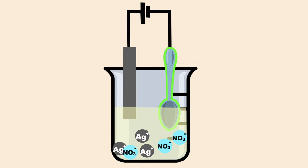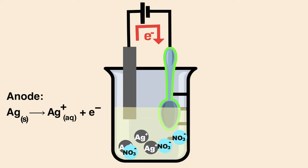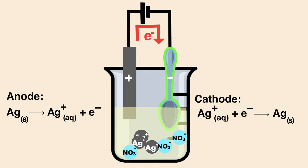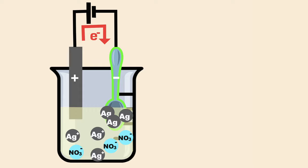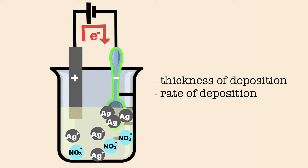When a steady current is passed through the solution, silver metal is removed from the anode and deposited onto the cathode, the spoon. The mass of the cathode increases as silver ions from the solution are deposited onto the spoon. The quality of the object is usually determined by the thickness of the deposited silver and the rate of deposition.